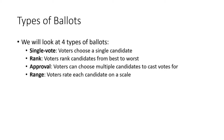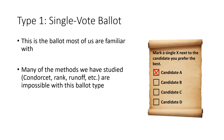If you've ever voted before, a single vote ballot is probably the kind you're familiar with. There's a list of candidates and you put a mark next to the candidate that you want to cast your single vote for. But many of the methods we've talked about — Condorcet method, rank methods, runoff methods, and so on — are impossible with this ballot type. We would need to know the full preference order, and all we know from this ballot is that this voter likes A the best; we don't have any idea how they feel about B, C, and D.